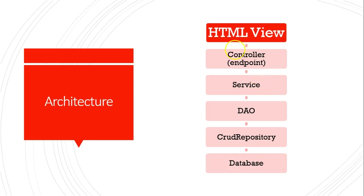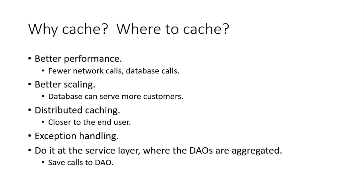What do we mean by cache? Think about what method calls typically are. In a method call, you're typically passing in a parameter and getting an object back, at least in a read or fetch-by-ID method call. Think about the joke about the definition of insanity — doing the same thing over and over again and expecting a different result. If you pass the same lookup key into a method over and over again, you should get the same result.